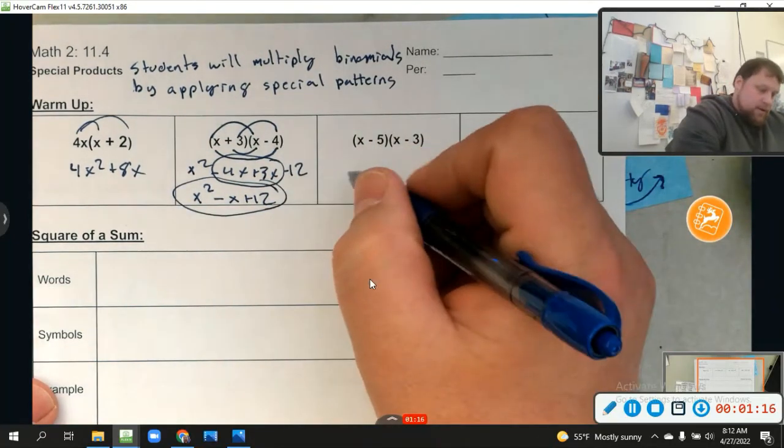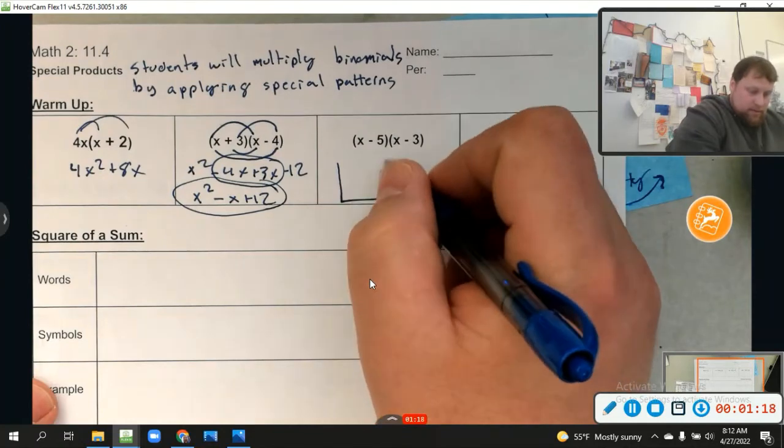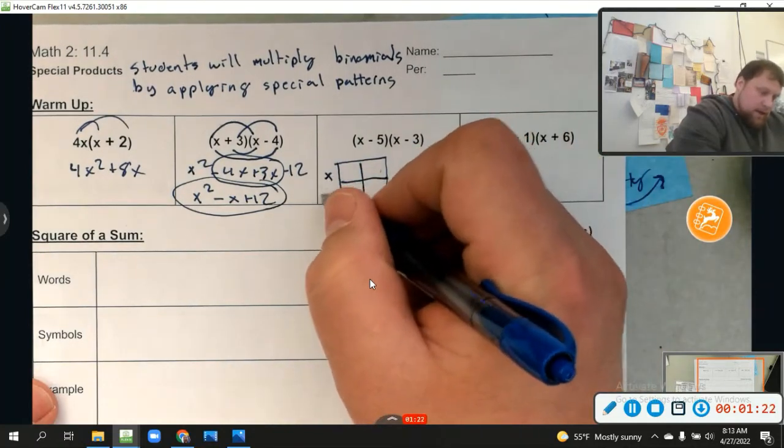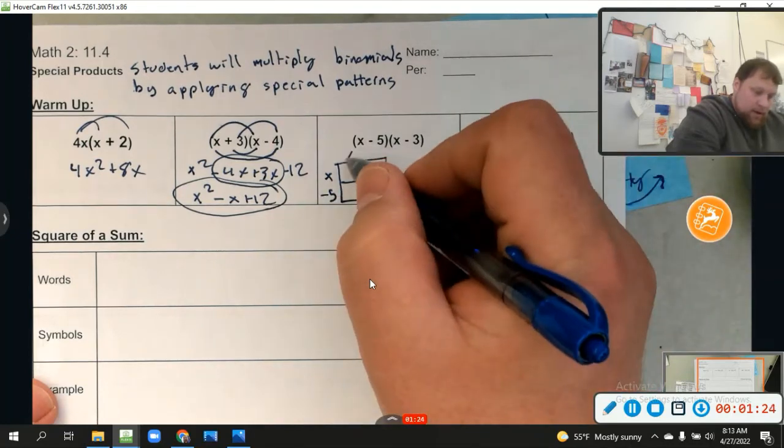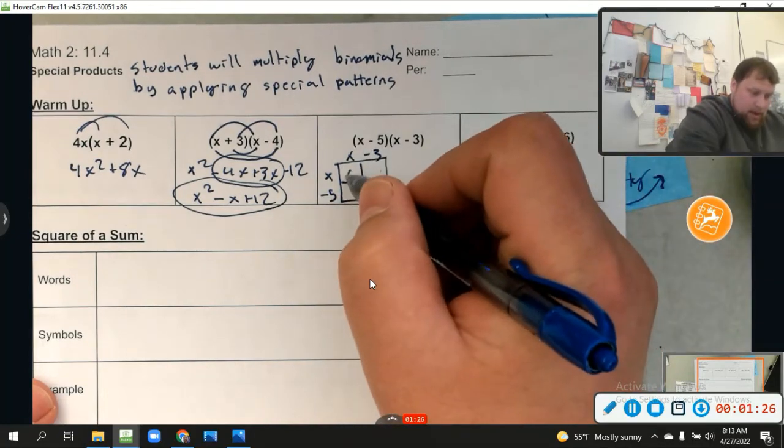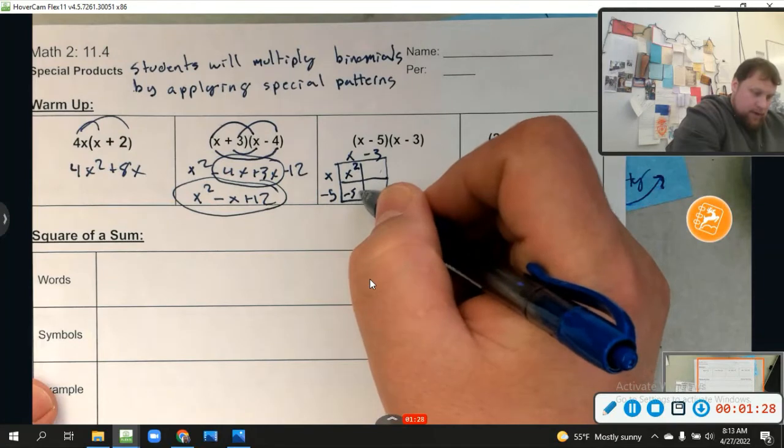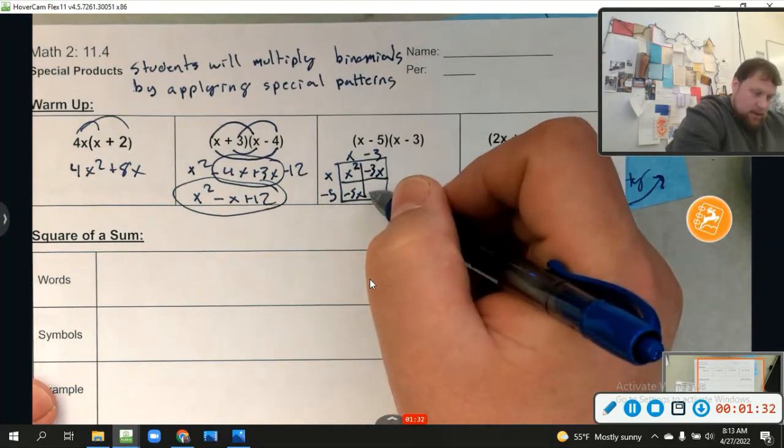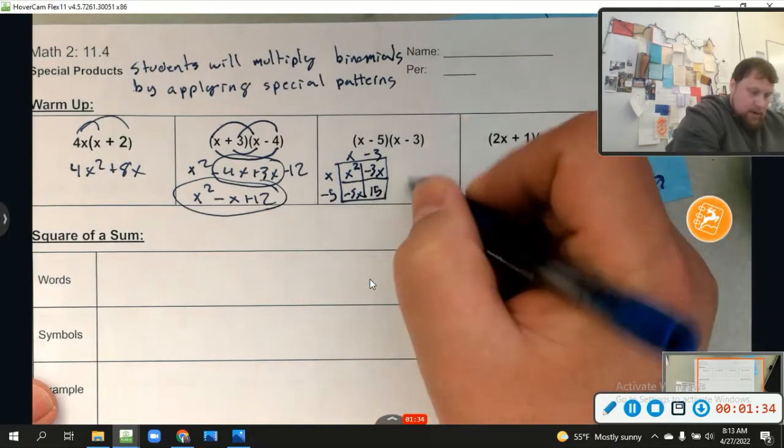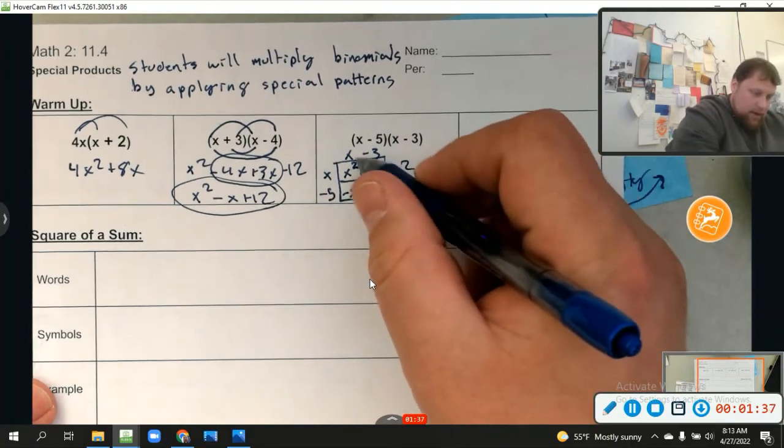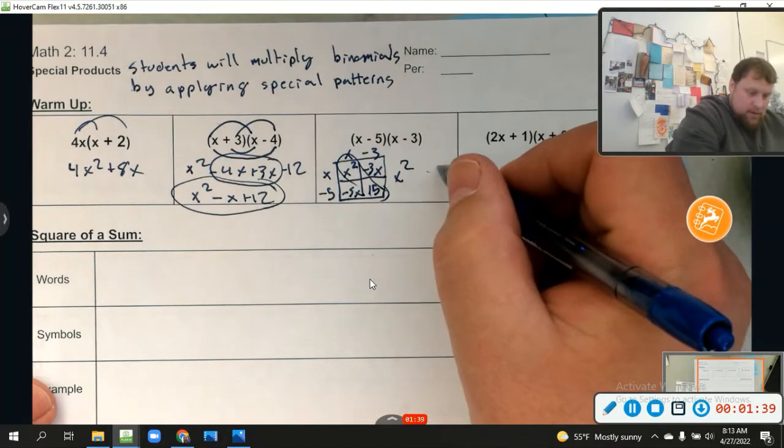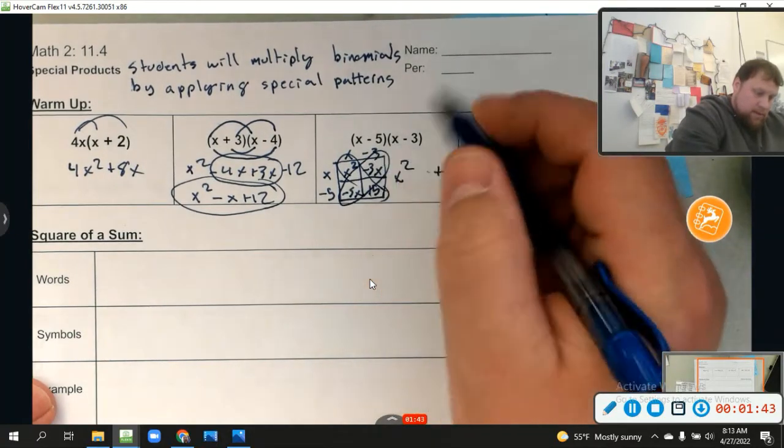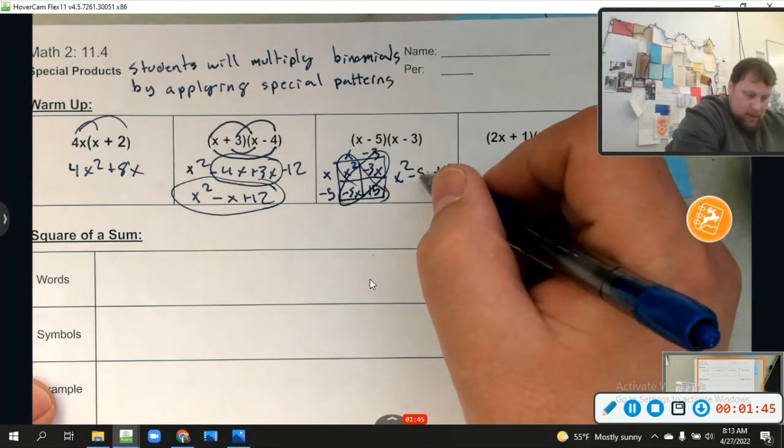I'm going to do this one with the generic rectangle because that's my favorite. You know me, you know that. So we got x minus 5, and I'll put it up here, x minus 3. So we get x squared minus 5x, and minus 3x, and then plus 15. So I end up with x squared and 15. This diagonal is first and last. So that's plus 15 because it's positive. In the middle, minus 5x minus 3x is going to be minus 8x.